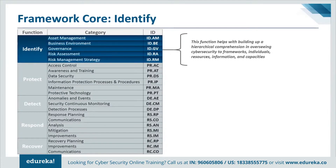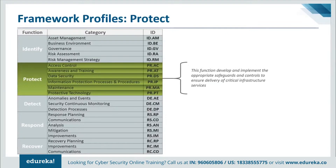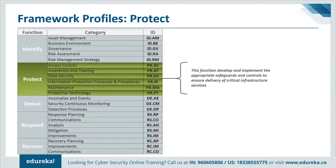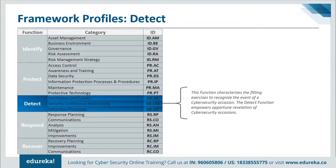The next function is Protect. It is used to develop and implement appropriate safeguards to ensure delivery of critical services. The Protect function supports the ability to limit or contain the impact of a potential cybersecurity event. Examples of outcome categories include information protection processes and procedures, maintenance, and protective technology.